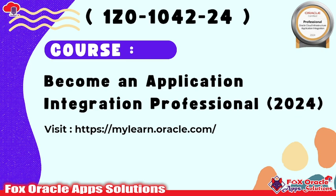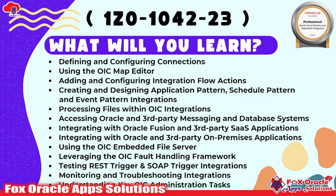The certification name is 'Become an Application Integration Professional' and the code is 1Z0-1042-2024 — the '24' defines the year in which it is released. Before appearing for the certification you have to go through the OIC-related course. If you are already familiar with the course content you don't need to worry; just go through your basics. If you are new to OIC, you have to go through the course.